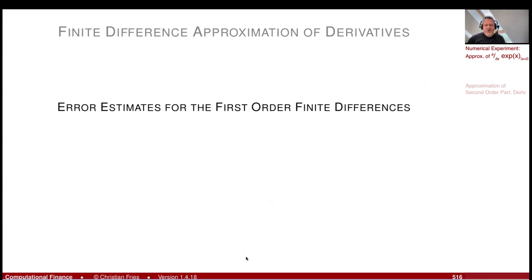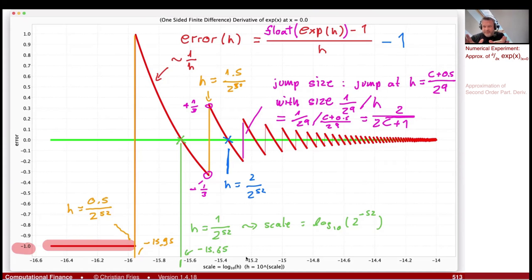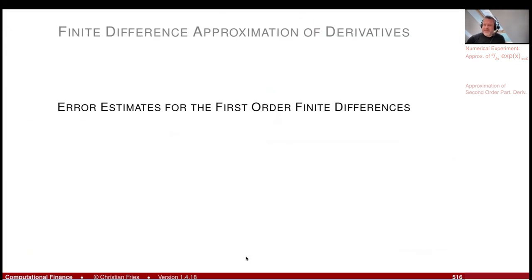Now we can discuss what is the optimal shift size. The total error has two components: one from the Taylor expansion, which is of order h and wants h small; and one from computer rounding arithmetic, of order 1/h, which wants h large. Finding the optimal h requires balancing these two components — we will calculate this in the next session.